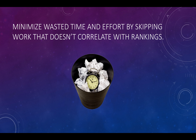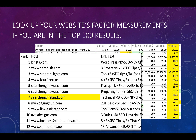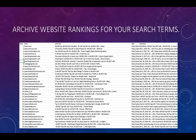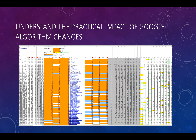You can minimize wasted time and effort by skipping work that doesn't correlate with rankings. You can look up your website's factor measurements if you are in the top 100 results. You can look up your competitors' factor measurements if they're in the top 100 results. You can create an archive of website rankings for your search terms over time.